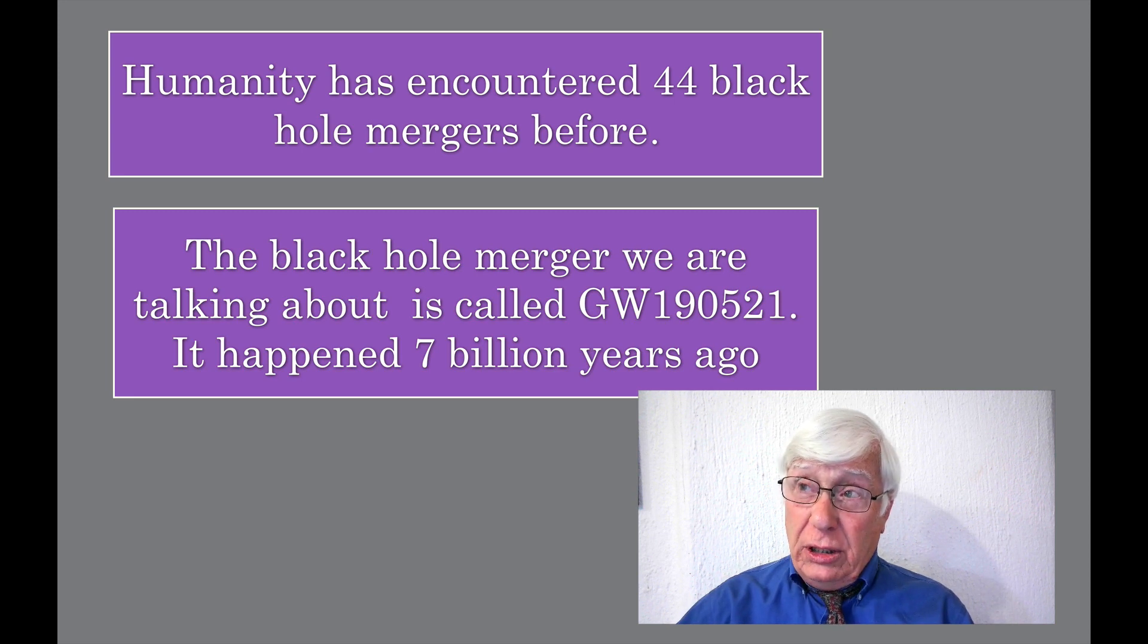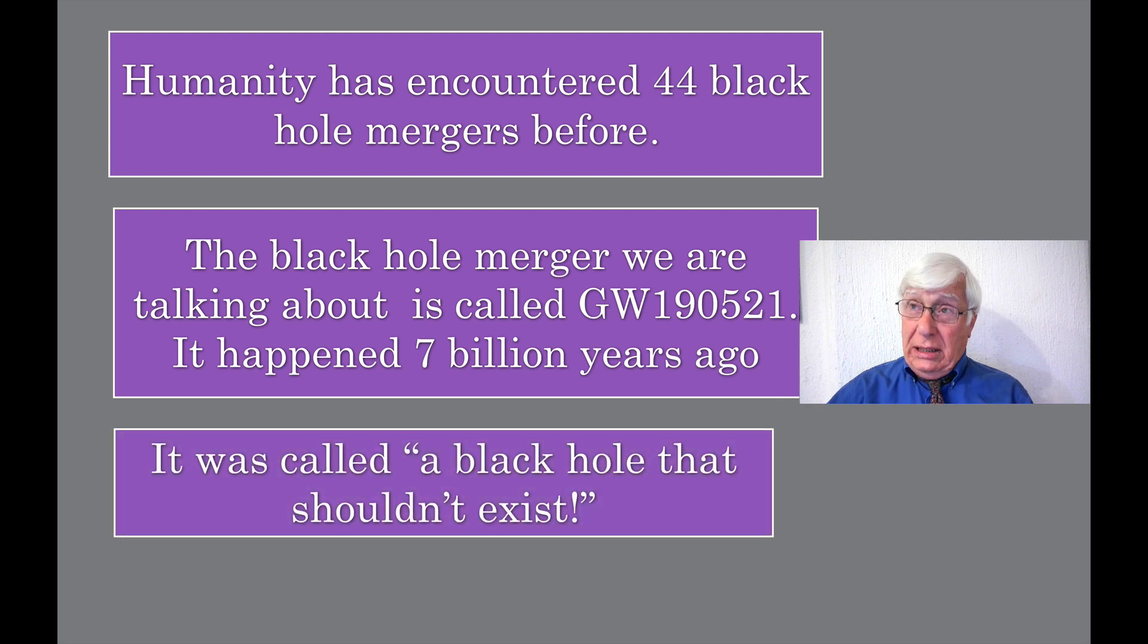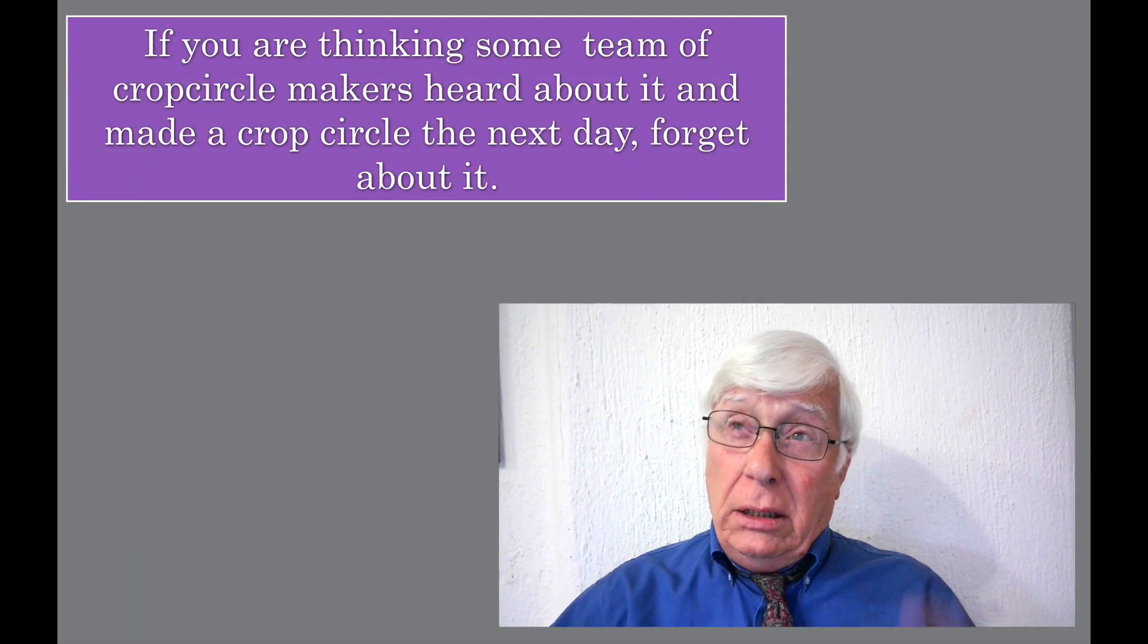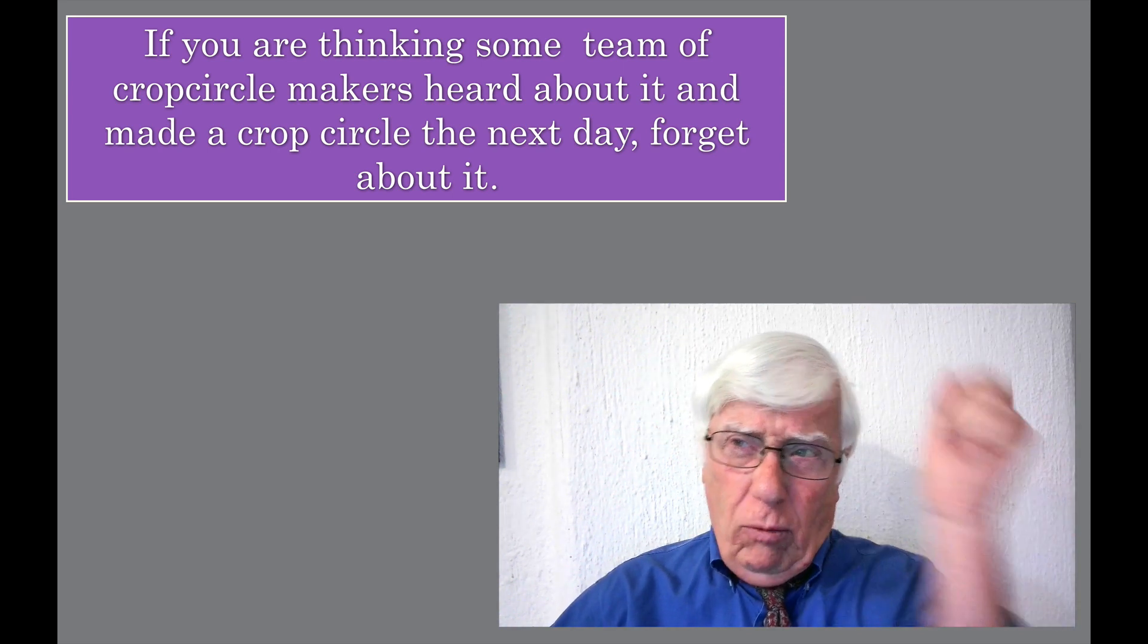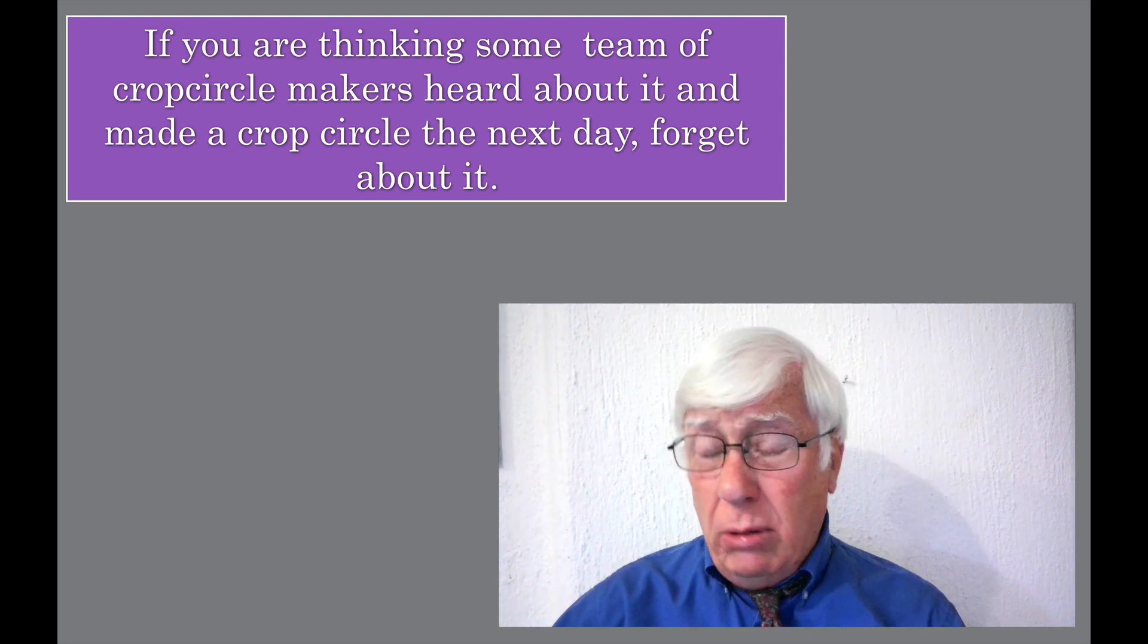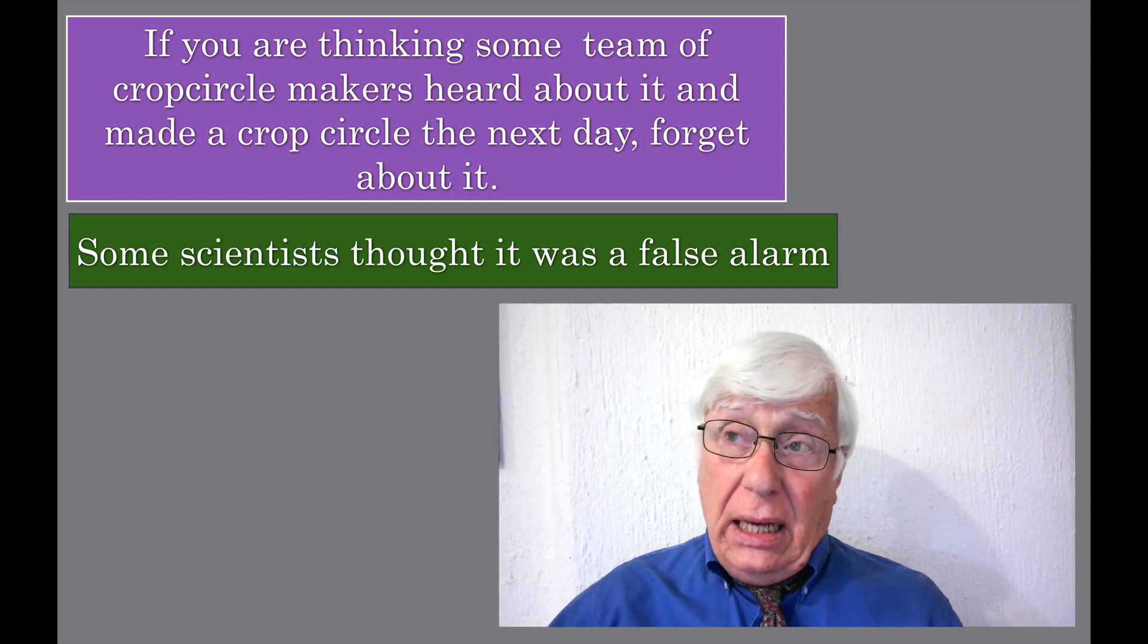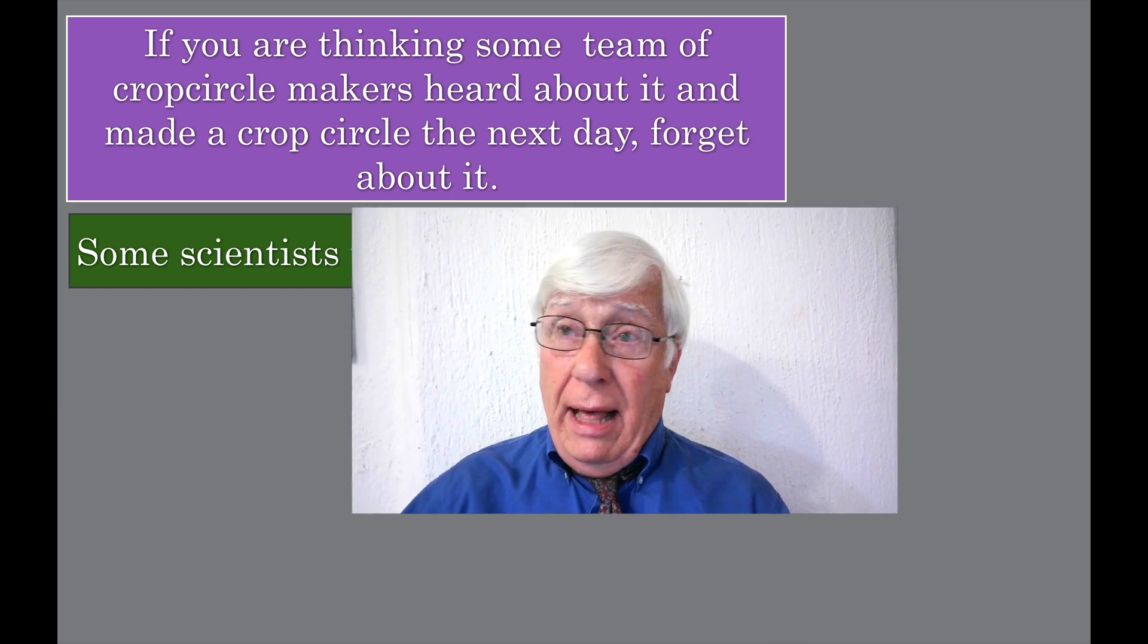The black hole merger we are talking about is called GW190521, and it happened 7 billion years ago. If the universe is 13 and a half billion years old, it was like halfway through. A long time ago. It was called a black hole that shouldn't exist. So if you're thinking some team of people heard about this merger on May 21st and went out and made a crop circle May 22nd, forget about that. It didn't happen.